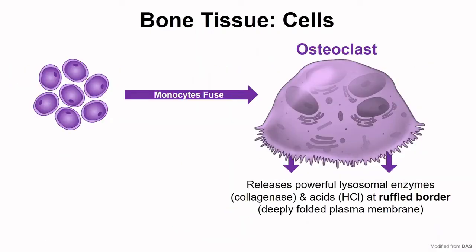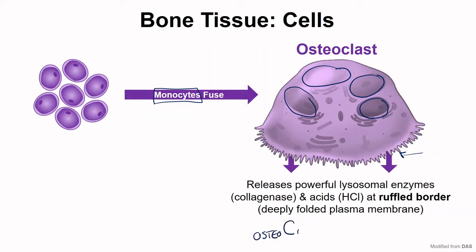The other cell of bone is formed by the fusion of monocytes — large phagocytic blood cells derived from the red bone marrow. A bunch of these cells fuse together to create the osteoclast, and so osteoclasts are actually multinucleated from this fusion. These cells are quite large. The ruffled border at the base of the osteoclast comes in contact with bone and secretes lysosomal enzymes and acid to break the bone down. You can remember that osteoclasts consume bone.